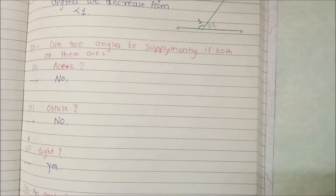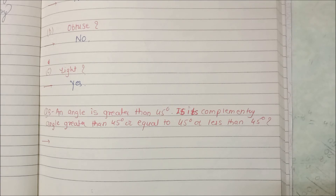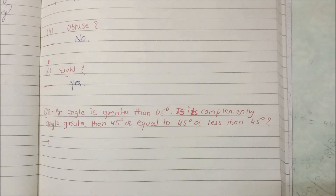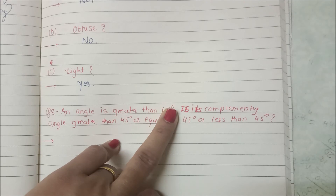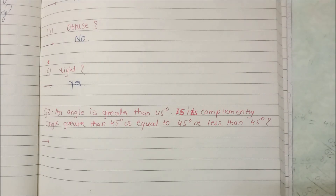Now we look at Question 8. An angle is greater than 45 degrees — it could be 46 or any value greater than 45. We need to find its complementary angle. Complementary angles sum to 90 degrees. If we take 45 and 45, that is 90 degrees. But since our given angle is greater than 45 — say 46 — its complementary angle cannot be greater than or equal to 45, because 46 plus 45 is 91, not 90.